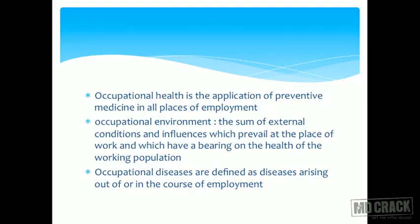Occupational environment is the sum of external conditions and influences which prevail at the place of work and have a bearing on the health of the working population. In other words, occupational environment is the place where a person works and everything surrounding that place which directly or indirectly affects the health of the employee.